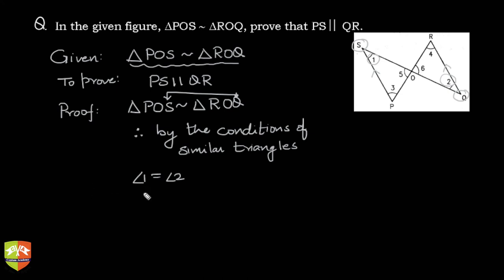This implies that alternate interior angles, that is angle PSO and angle RQO, are equal.